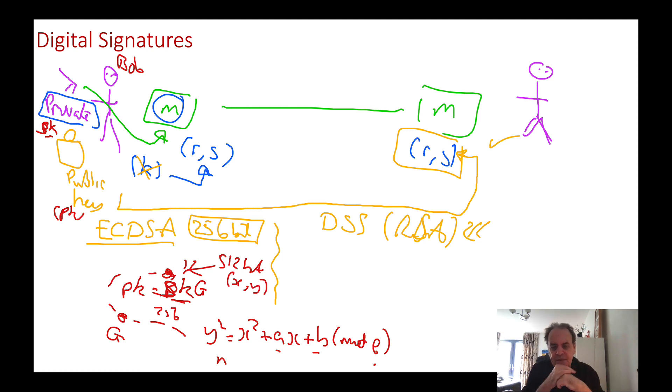There are some curves where we ignore the Y value, such as curve 25519 and curve 448, and we only deal with the X value. But in most other standard curves, we use the X and Y point, so our public key becomes an XY point.